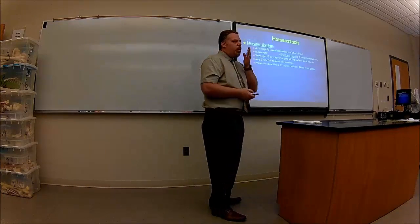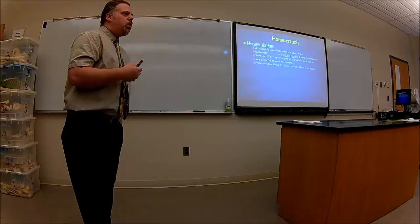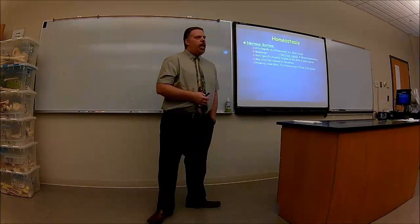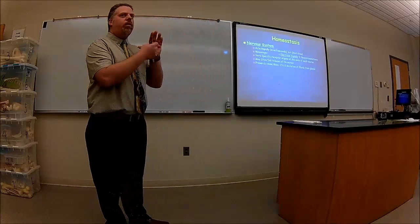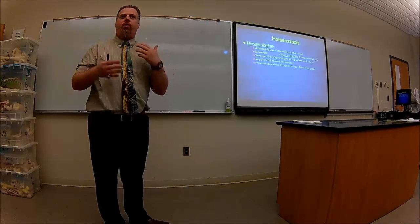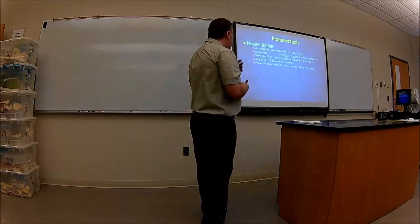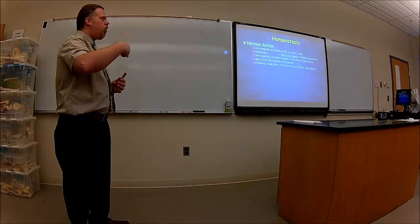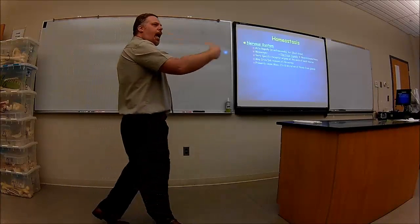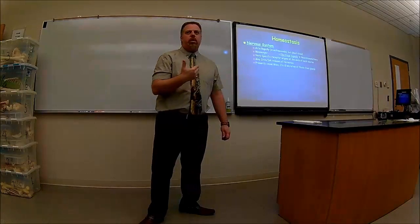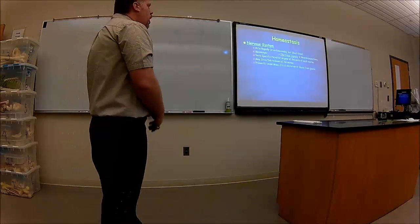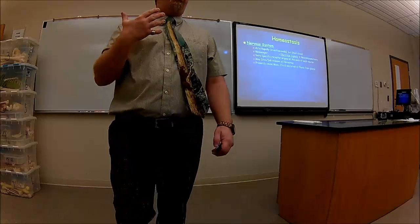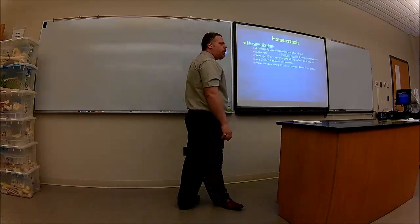The nervous system is a messenger system — it's going to tell another organ what to do. It acts very rapidly. You touch something hot, you let go, and that sensation and pain goes away in milliseconds. The messenger is going to be an electrical message going down the axon — that action potential we've been talking about. At the very end it's going to release something called a neurotransmitter. It's very specific: if I touch something hot, my leg doesn't go up.